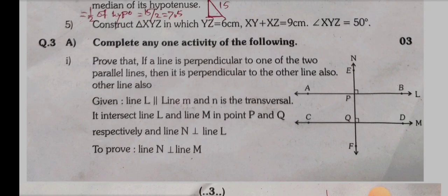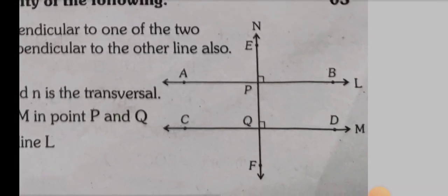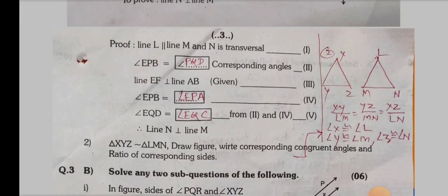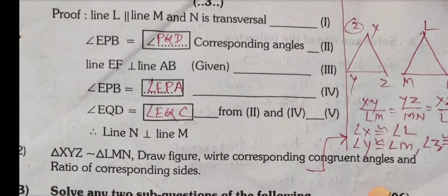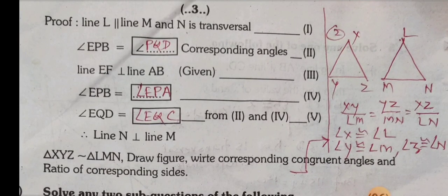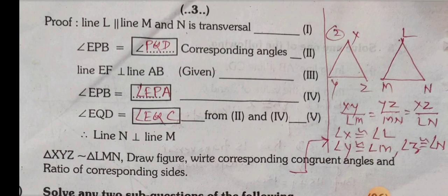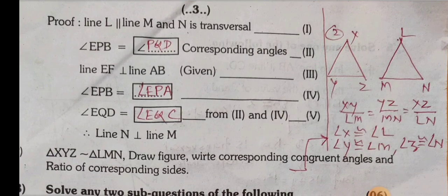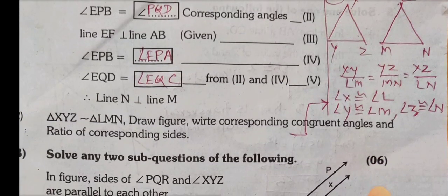Question 3a: Complete the activity. In the figure, lines L and M are parallel and N is the transversal. Line L is parallel to M, N is the transversal. Therefore angle EPB equals angle PQD (corresponding angles). Line E is perpendicular to AB, therefore angle EPB equals angle EPA.